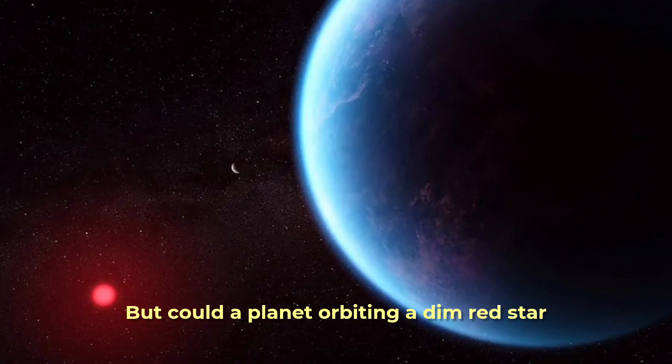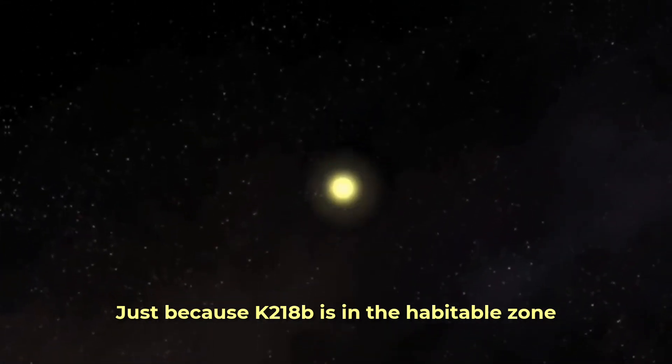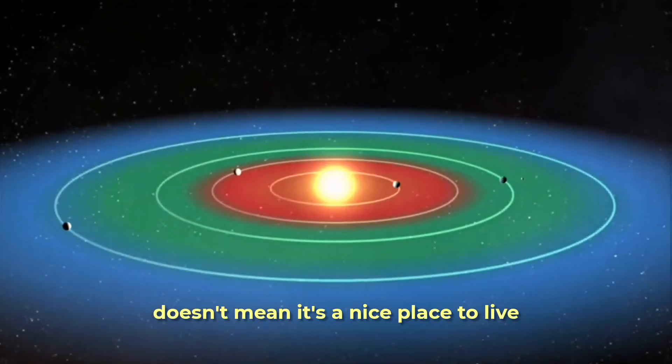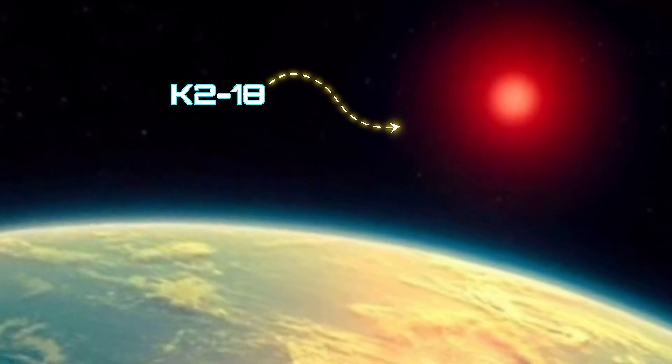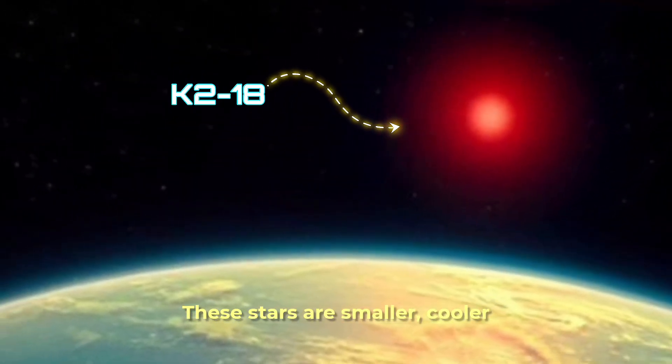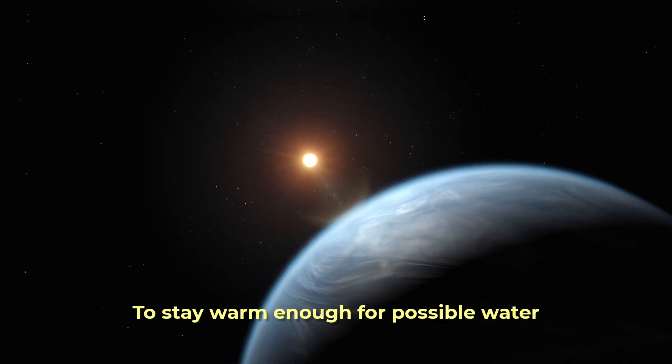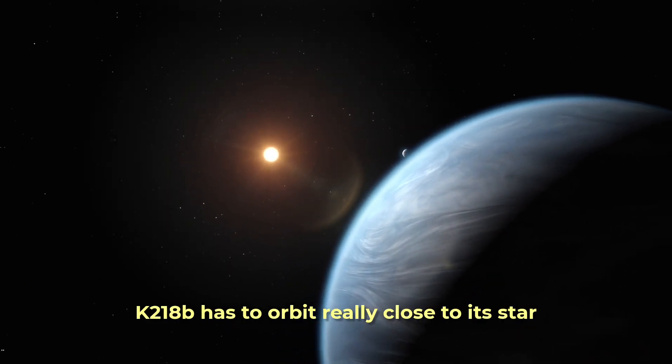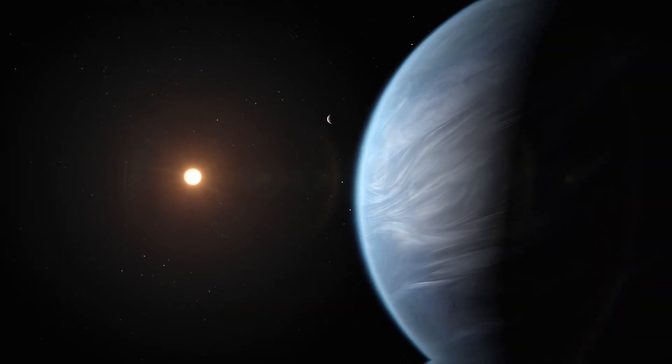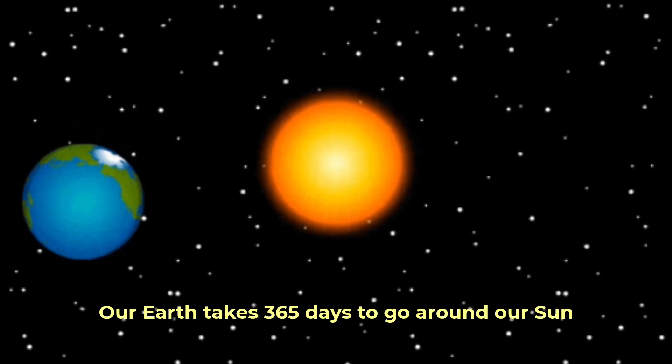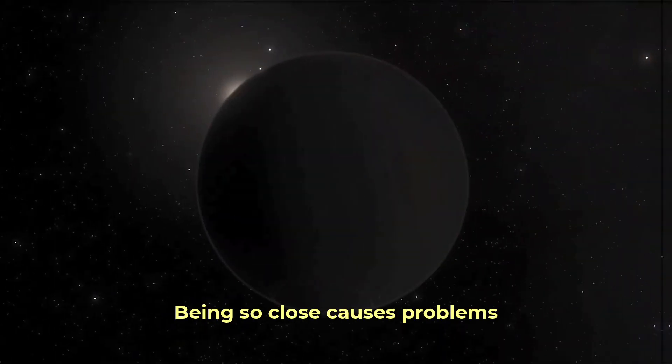But could a planet orbiting a dim red star really be friendly to life? Just because K2-18b is in the habitable zone doesn't mean it's a nice place to live. Its star, K2-18, is a red dwarf. These stars are smaller, cooler, and much dimmer than our Sun. They are the most common stars in the galaxy, though. To stay warm enough for possible water, K2-18b has to orbit really close to its star. It zooms around K2-18 in only 33 days. Our Earth takes 365 days to go around our Sun. Being so close causes problems.